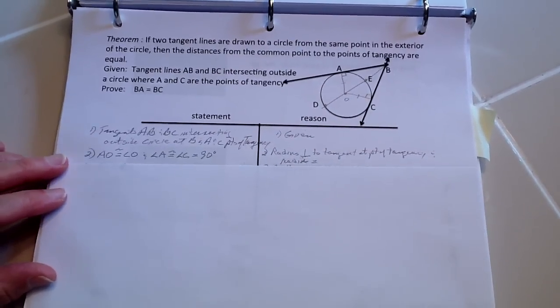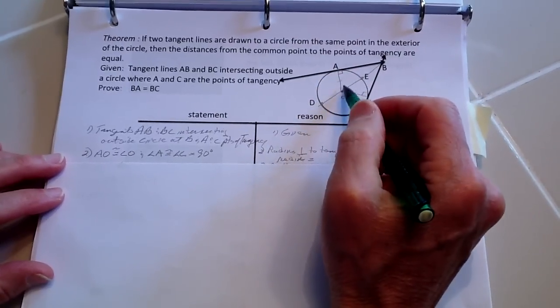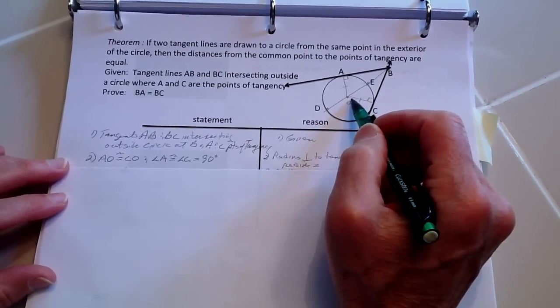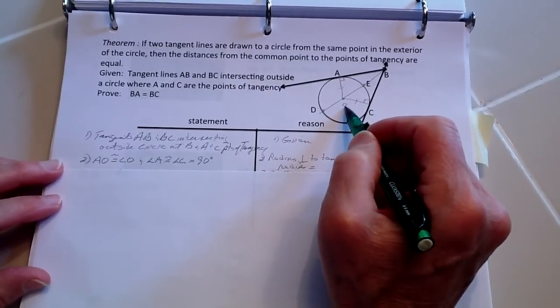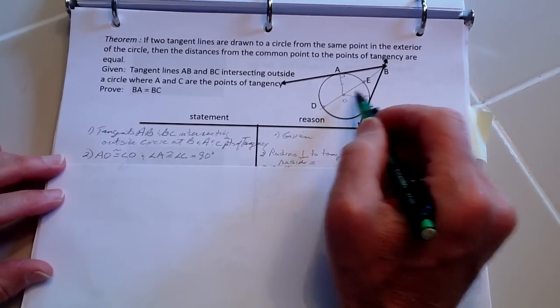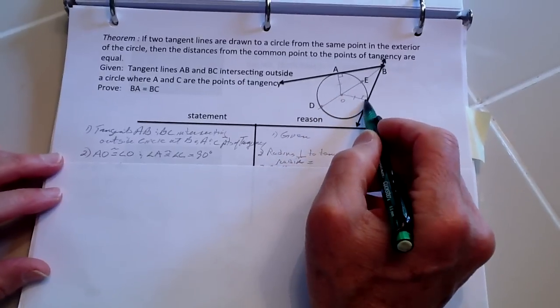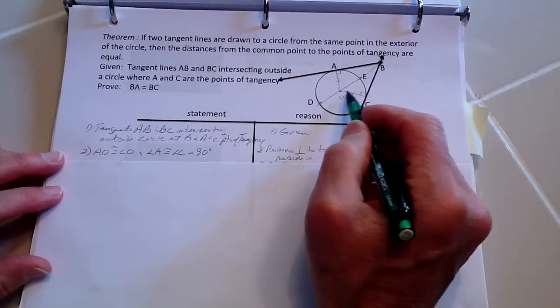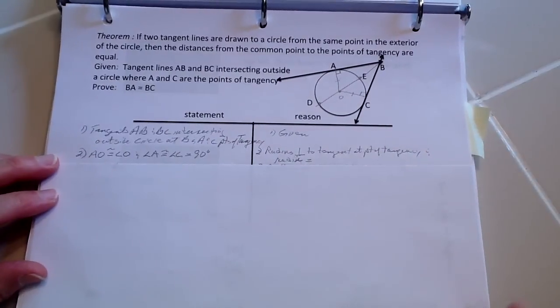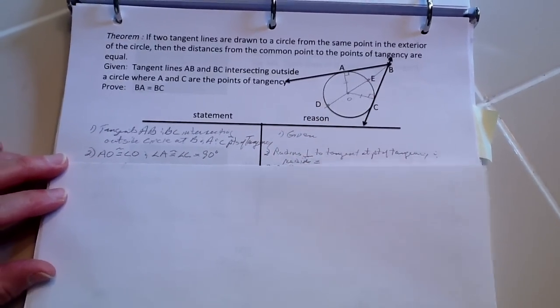We know that AO equals CO because they're the same radius. Here's our center, point O, so these radii obviously have to be the same. We also know that these radii are perpendicular to the tangents at the point of tangency because that's a theorem we've proven earlier.